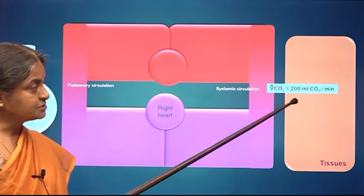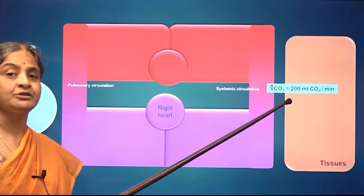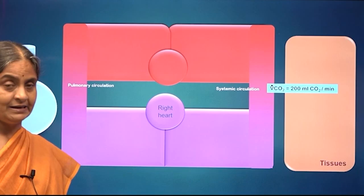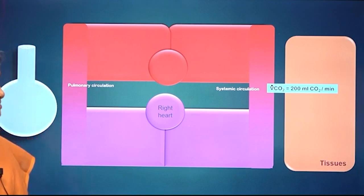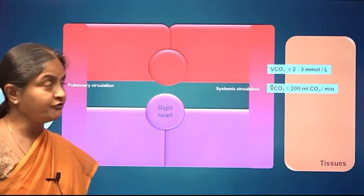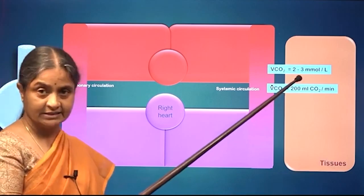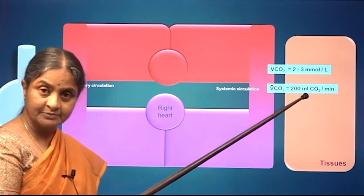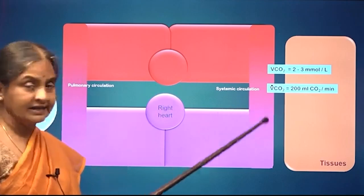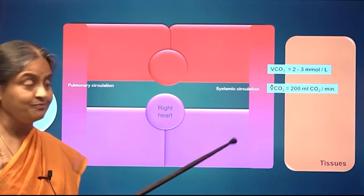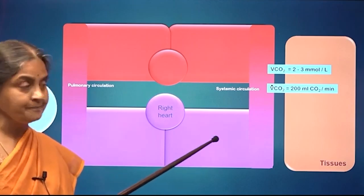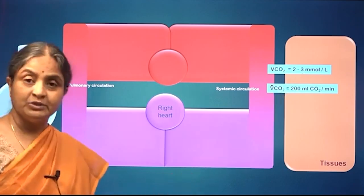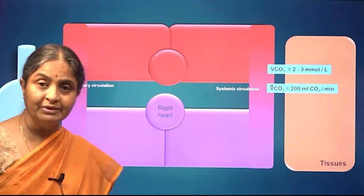The tissues put out about 200 milliliters of carbon dioxide per minute in the resting state in the reference adult male. This would translate to a steady state output of 2 to 3 millimoles per litre. 200 milliliters of carbon dioxide that comes out per minute will be added to the cardiac output — that is 5 litres of blood flowing through the tissues every minute — so 200 ml in 5 litres translates to 2 to 3 millimoles per litre.